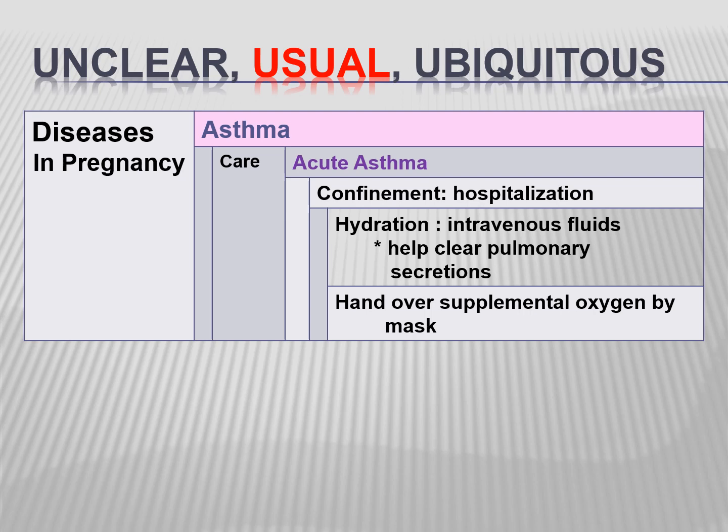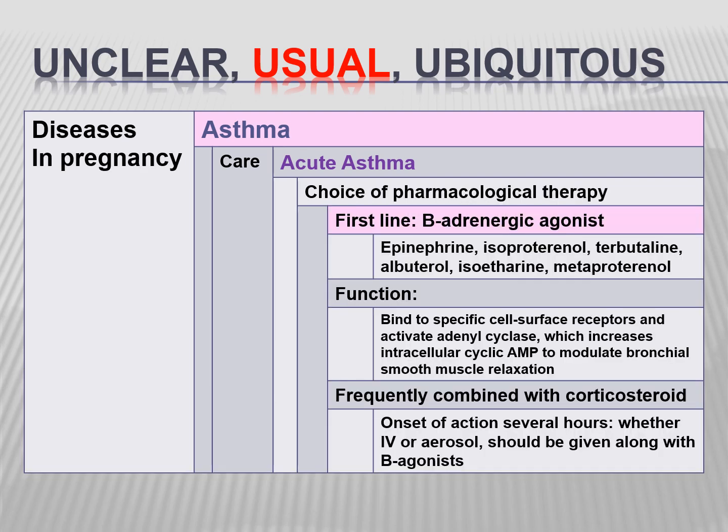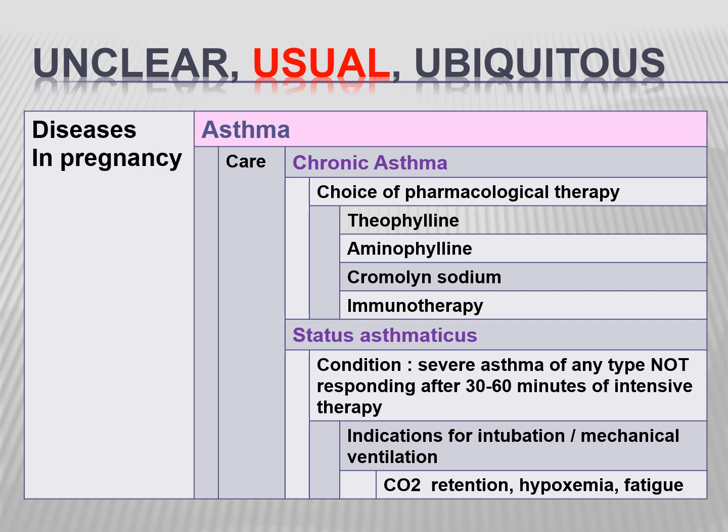Acute asthma warrants hospitalization. The patient must be hydrated with IV fluids to clear pulmonary secretions and given supplemental oxygen by mask. First-line therapy is beta-adrenergic agonists — epinephrine, isoproterenol, terbutaline, and butyryl — which bind to specific cell surface receptors and activate adenyl cyclase, increasing intracellular cyclic AMP to modulate bronchial smooth muscle relaxation. This is frequently combined with a corticosteroid, with onset of action over several hours whether IV or aerosol. For chronic asthma, pharmacologic therapy includes theophylline, aminophylline, cromolyn, and immunotherapy.